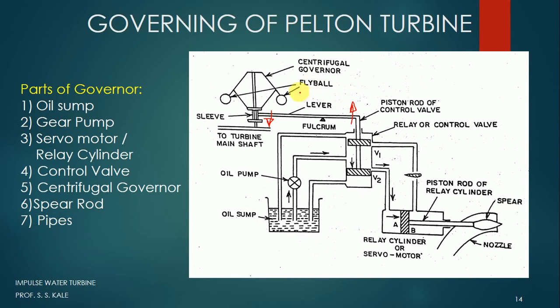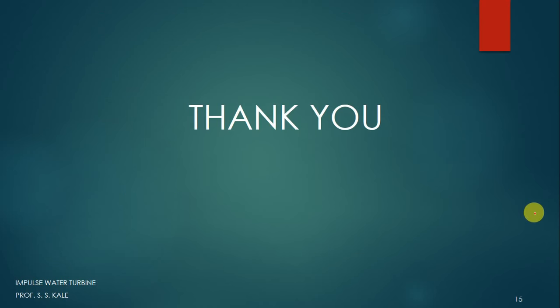When speed reduces, or when speed increases, the control valve and lever system will adjust accordingly, and after adjusting, we can maintain the constant speed of the turbine, which is the requirement of the generator connected to the turbine. Thank you very much for listening.